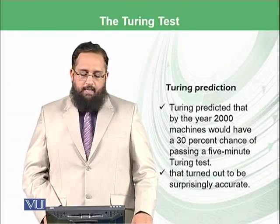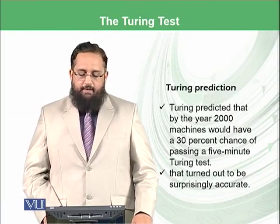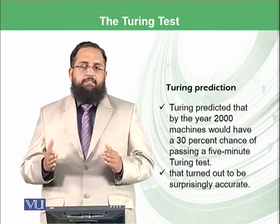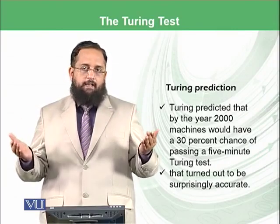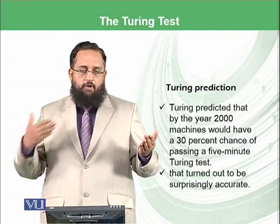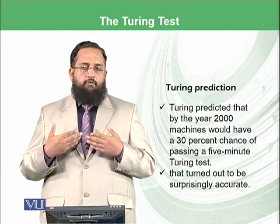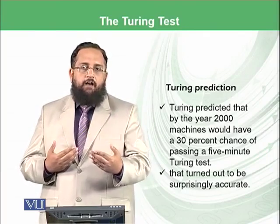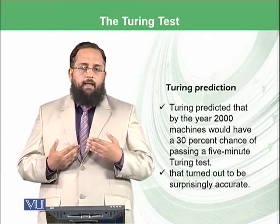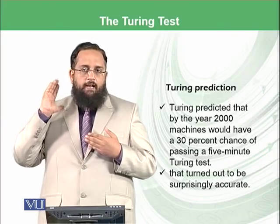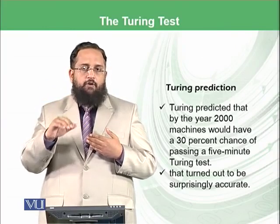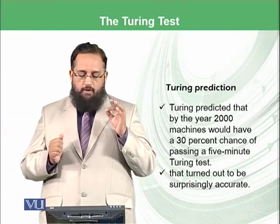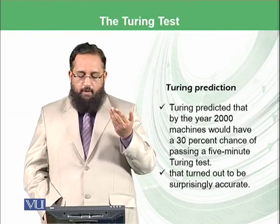Turing predicted that by the year 2000, machines would have a 30% chance of passing a 5-minute Turing test. This means you are communicating constantly for 5 minutes to a machine and you would not realize that this was a machine or a human. He proposed in 1950 that after 50 years, by the year 2000, 30% of the time your system would be doing perfect and would be able to pass the test.